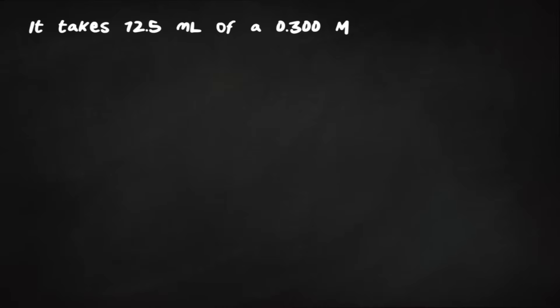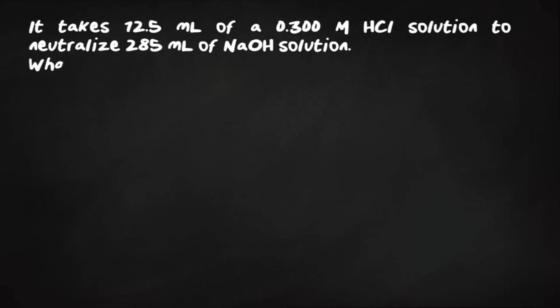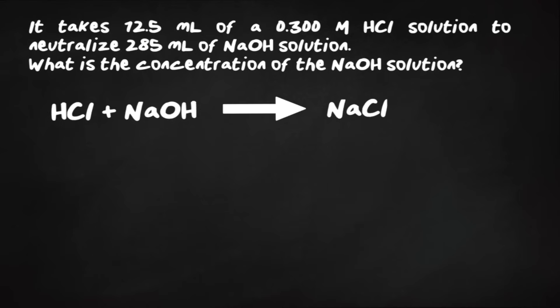Let's head over to the blackboard for our example. It takes 12.5 milliliters of a 0.300 molar HCl solution to neutralize 285 milliliters of NaOH solution. What is the concentration of the NaOH solution? And we're given our balanced equation.